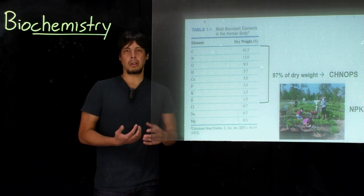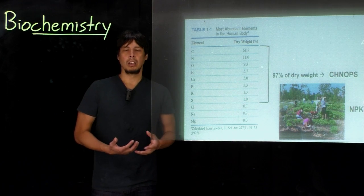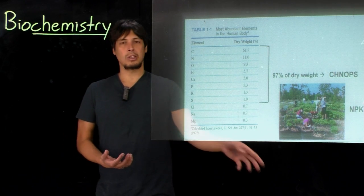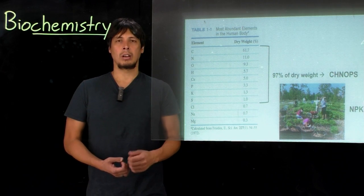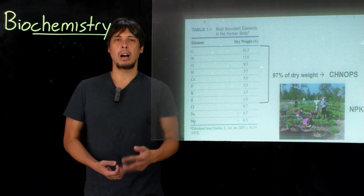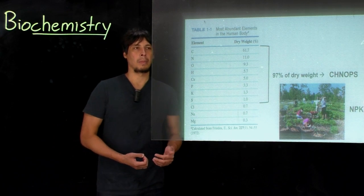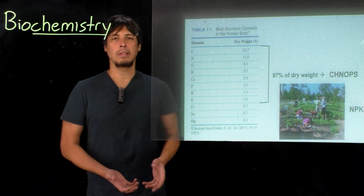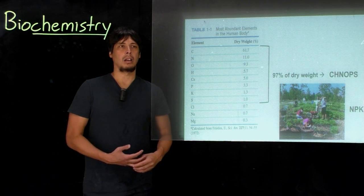Some of these you may recognize from the common mnemonic to remember these biologically important elements, which is carbon, hydrogen, nitrogen, oxygen, phosphorus, and sulfur. And so these elements on top here make up 97% of the dry weight in a human body.